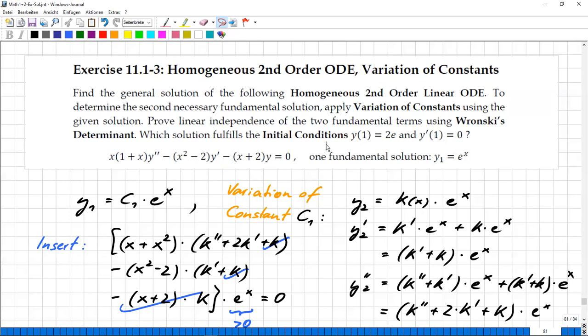So first of all, what is variation of constants? Well, after having found one solution, it's just an interesting idea to say, in order to find another, which I call y2, fundamental solution to this equation, perhaps it's a good idea to replace this constant for a term of x, an unknown term of x. And in order to make this clear, it's just a little bit renamed. So c is exchanged for k.